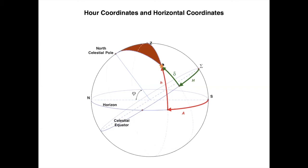For the hour circle of the star, you go from the star to the North Celestial Pole, trace a great circle where it cuts the Celestial Equator. The hour angle is measured from the meridian and the declination from the Celestial Equator to the star. For horizontal coordinates, you go from the south point to the great circle from the zenith to the star crossing the horizon — that's the azimuth. And from the horizon to the star, you have the altitude.